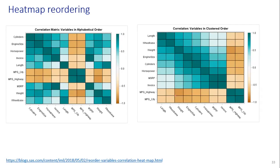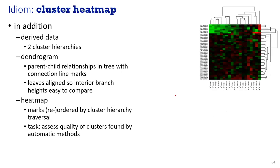For scalability, one million items or hundreds of categorical levels are used with heat maps. The cluster heat map adds derived data: two cluster hierarchies — dendrograms and heat maps. For dendrograms, parent-child relationships are shown with connection line marks and aligned leaves, making interior branch heights easy to compare. Heat map marks are reordered by cluster hierarchy traversal, and the task is to assess quality of clusters found by automatic methods.